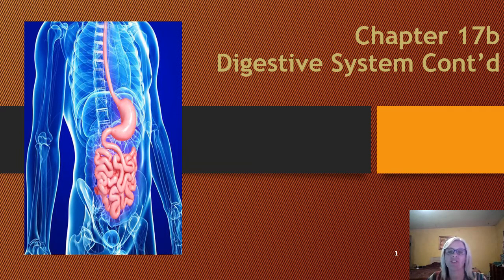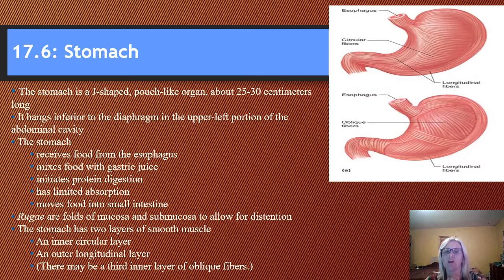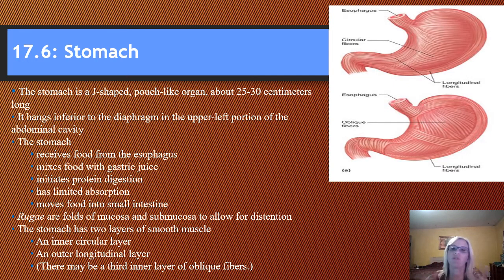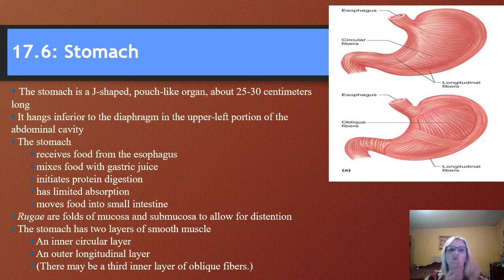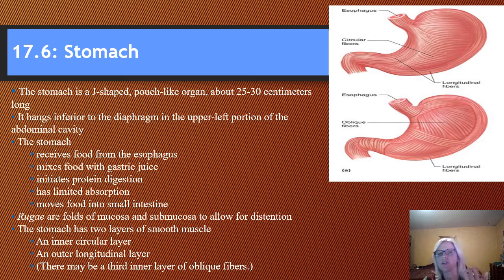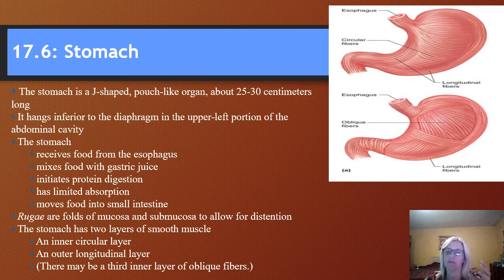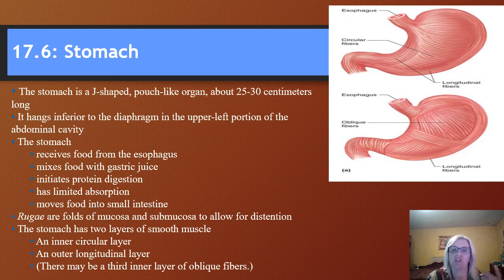We're going to finish up our talk on the digestive system. The stomach is a pouch-like organ, 25 to 30 centimeters long. It sits just below, or inferior to, the diaphragm, more towards the upper left portion of the abdominal cavity. It receives food from the esophagus, then mixes that food during segmentation along with gastric juice that helps to break it down. It initiates protein digestion.